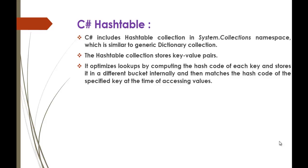Suppose you are storing a value in the Hashtable using the format of key-value pair — when you assign a key, that key will have a hash code and will be stored in a different bucket internally. When you try to access a particular value using the key, that key will be matched with the hash code. It optimizes lookups by computing the hash code of each key and matches the hash code of the specified key at the time of accessing values.